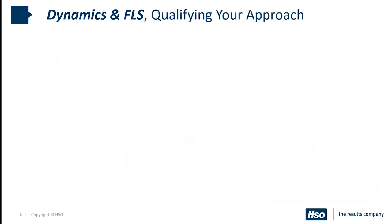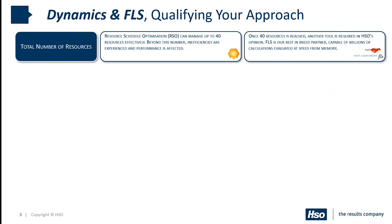Moving on to the qualification area: the first factor is the total number of resources. As I mentioned, RSO does have optimization capabilities, but as you add volume of jobs and numbers of resources, the calculations grow exponentially. Typically we would say that if you've got up to 40 resources, a pure Dynamics solution is more suitable, but once you've gone beyond that number you're probably looking at something like FLS to fully utilize that optimization power.